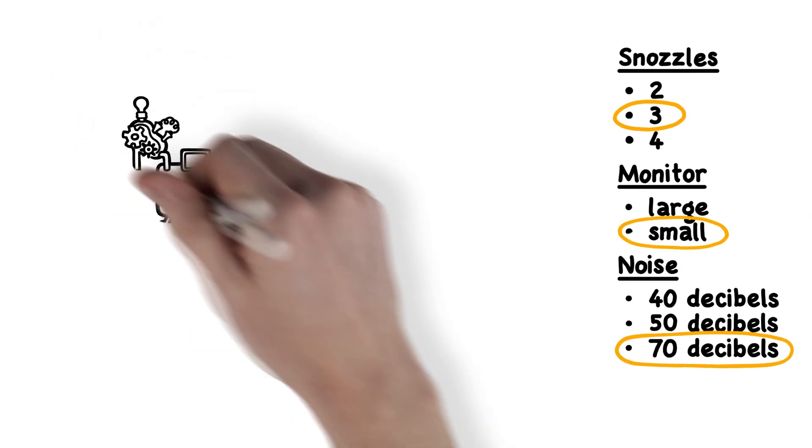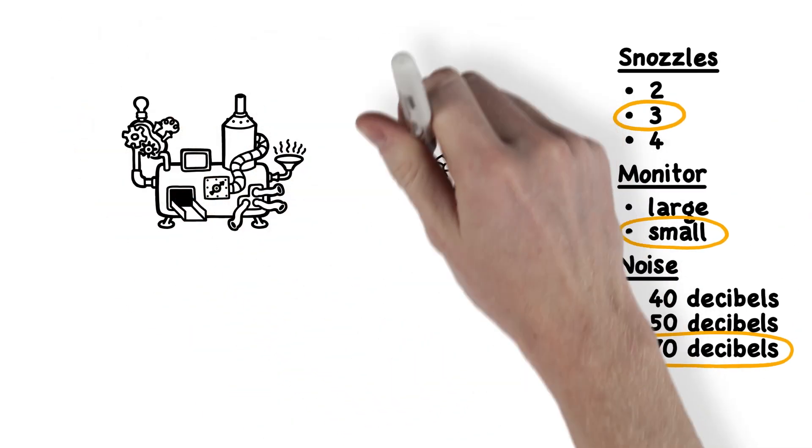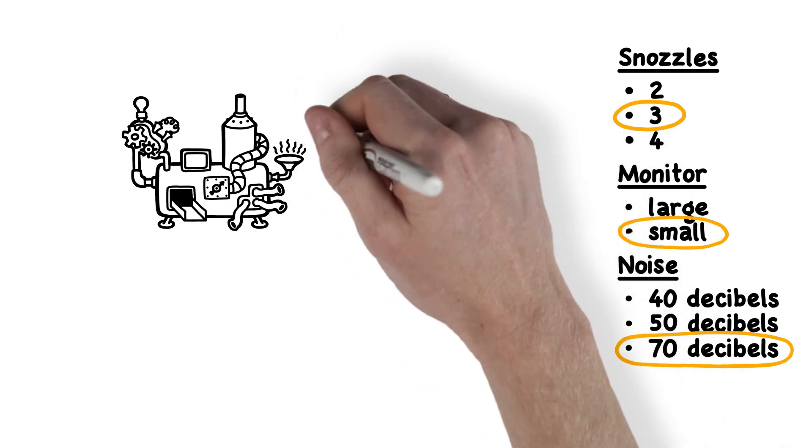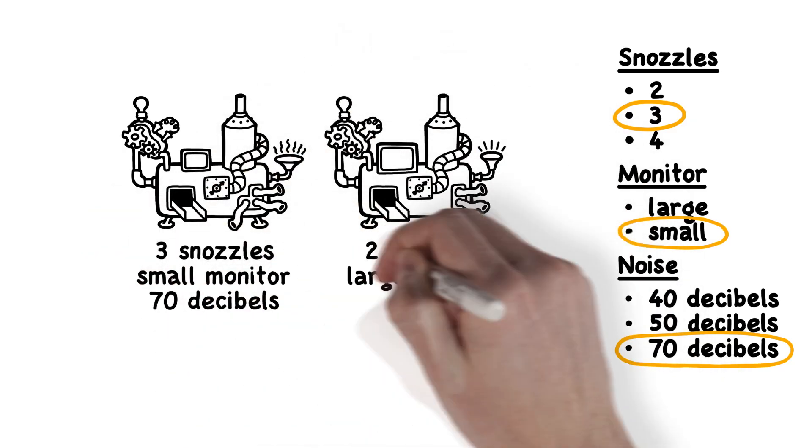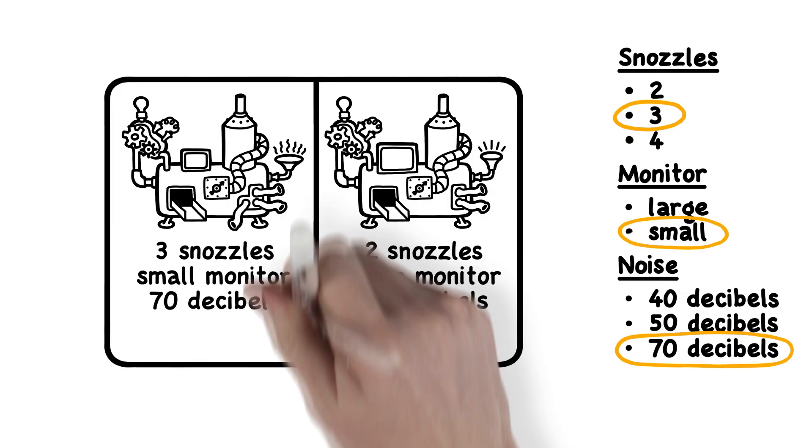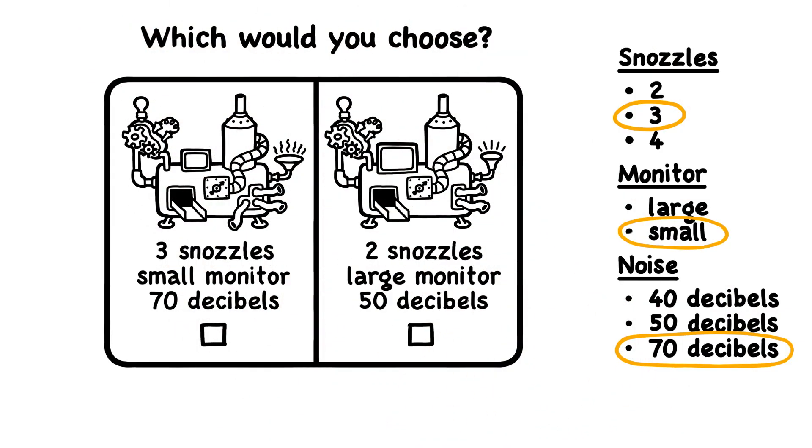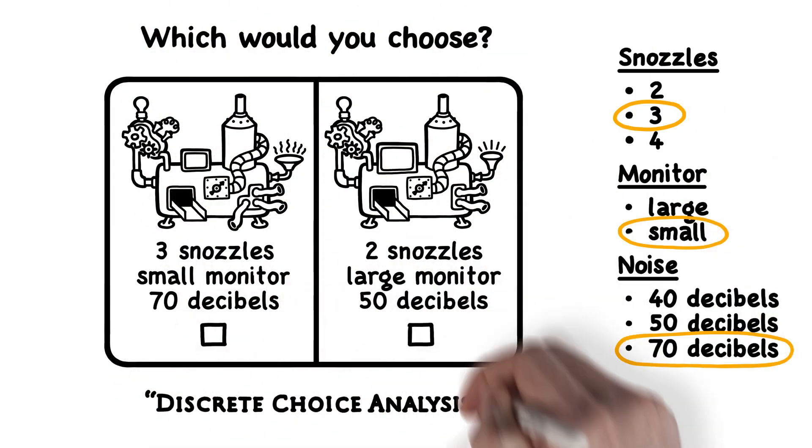Conjoint analysis software systematically combines the features from Jane's list to show competing bazoogles at different prices. Consumers simply pick one from each scenario, much like they do in the real world. You can see why it's often called discrete choice analysis.